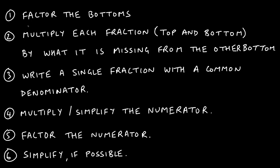Here is how we generalize the steps. First, factor the denominators. Second, multiply each fraction — top and bottom — by what's missing from the other denominator. Third, write it as a single fraction with a common denominator. Fourth, multiply out or simplify the numerator. Fifth, factor the numerator — you'll understand why as we get into examples. Finally, simplify if possible by canceling anything that cancels.